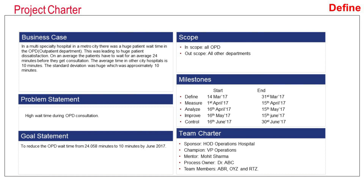The team created the project charter in which the goal statement was to reduce the OPD wait time from 24.058 minutes to 10 minutes by June 2017. HOD Operations of the hospital was the sponsor, Vice President Operations was the champion, mentor is Mohit Sharma, process owner is Dr. ABC, and team members were ABR, OYZ, and RTZ. The project started on 14th March with a target finish date of 30th June. All OPDs were in scope, and any department apart from OPD was out of scope.